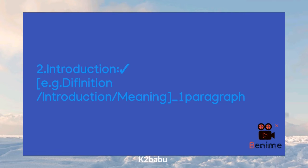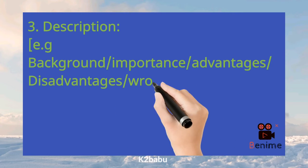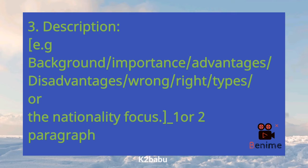Now let's start with the third step. The third step is the description, also called the body. This includes the background, importance, advantage, disadvantage, right or wrong, types, or the main focus — written in one or two paragraphs.